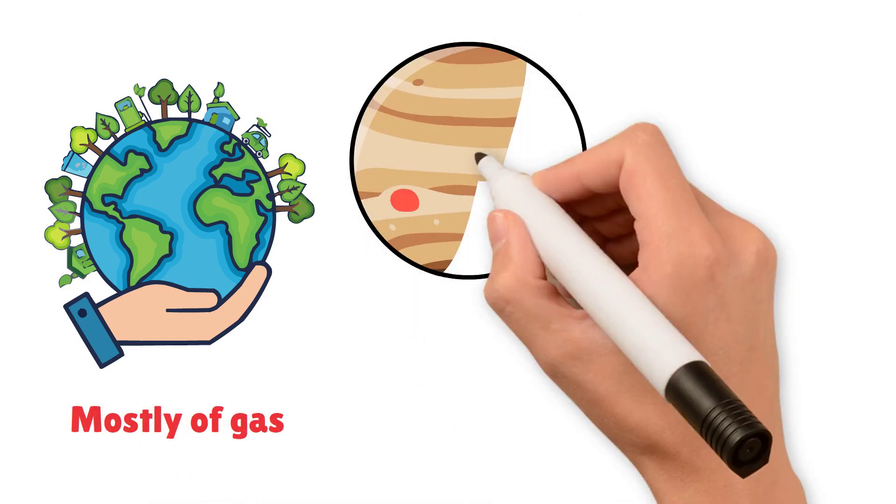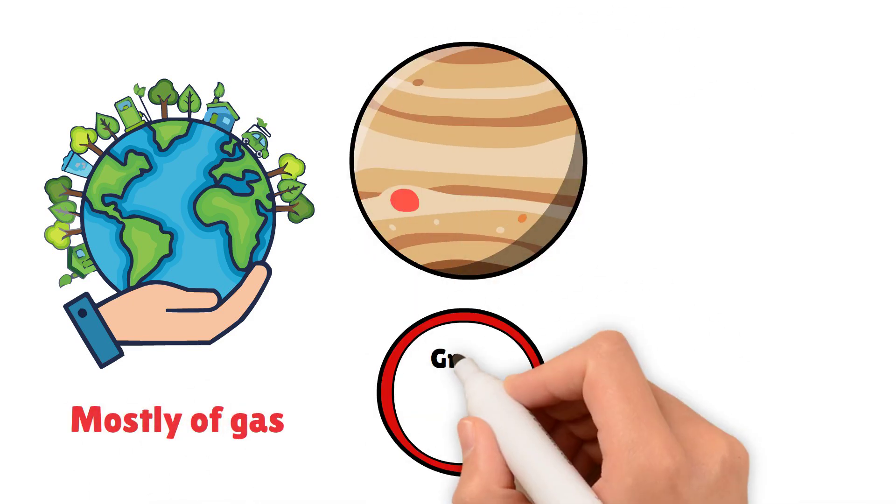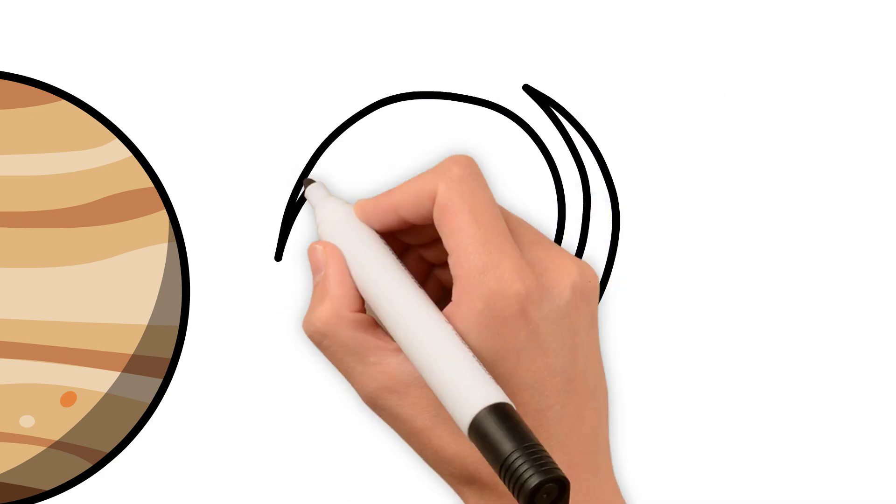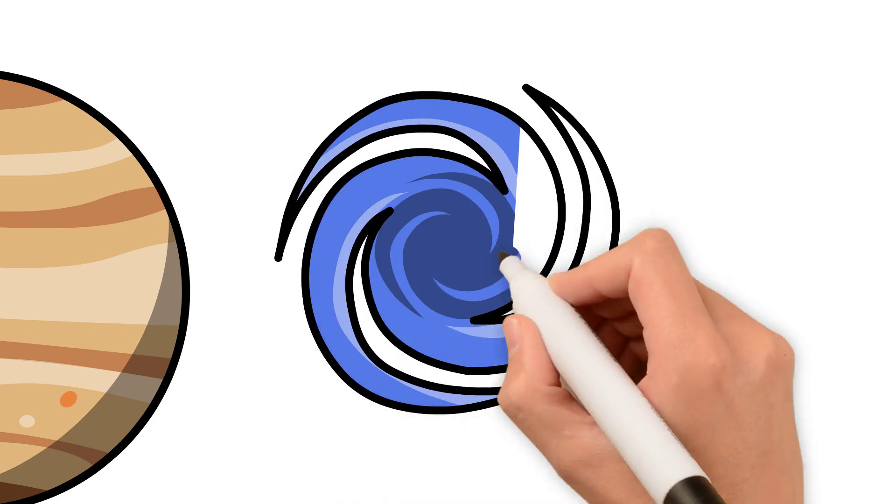Jupiter is the largest planet in our solar system and is known for its great red spot, a giant storm that has been raging for hundreds of years.